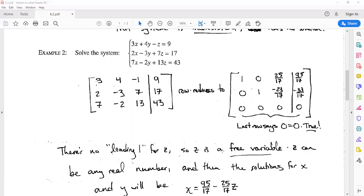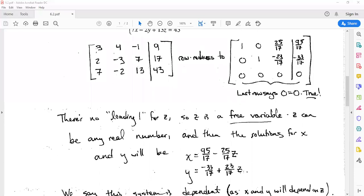We've seen these before. This means that z can be any real number that we want, and then the solutions for x and y will then depend on what value we've chosen for z. Let's now take this augmented matrix and rewrite the corresponding system of linear equations. What we get is that one times x plus 25 over 17 times z equals 95 over 17.